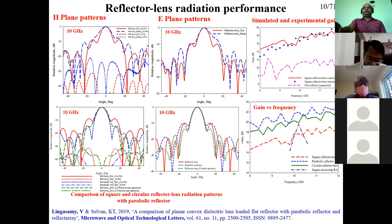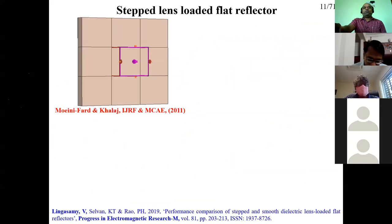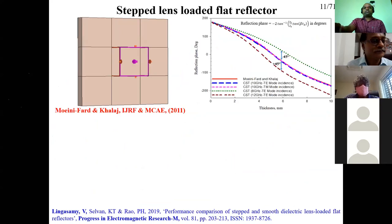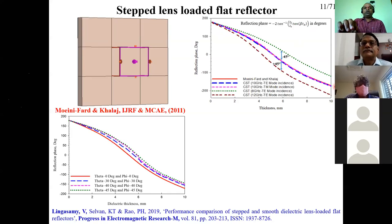We then thought of applying the reflectarray unit cell approach to design the reflector lens. This was reported in 2011 but had not been compared with the smooth reflector lens. We took a metal-backed dielectric unit cell element and characterized it for reflection phase. To validate the simulation, we used an empirical formula derived by Munk and colleagues for reflection phase calculation, and found it perfectly matched the simulation. We then simulated for various incident angles and found that the reflection phase performance does not change much with angle.